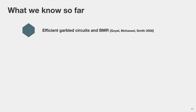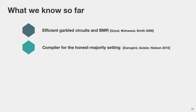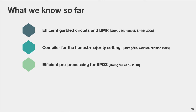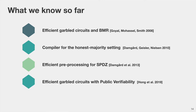So what do we know so far about such protocols? In 2008, Goyal, Mohassel, and Smith showed how to construct garbled circuits and the multi-party BMR protocol with better efficiency using only covert security. Damgaard, Geisler, and Nielsen showed how to compile certain secret-sharing-based protocols in an honest majority setting into covertly secure protocols. In 2013, Damgaard et al. showed how to construct a very efficient preprocessing phase for the SPEED protocol with covert security. And very recently in 2019, Hong et al. showed efficient garbled circuits with covert security and public verifiability. The first three protocols here do not have public verifiability.